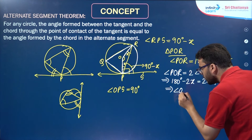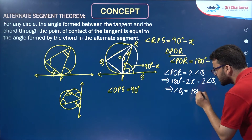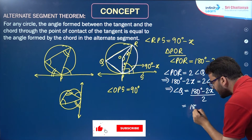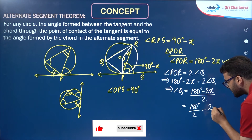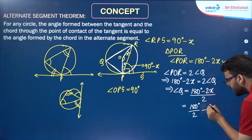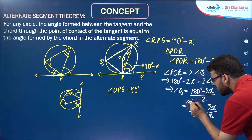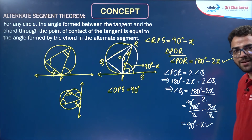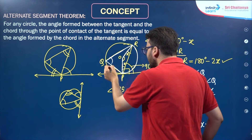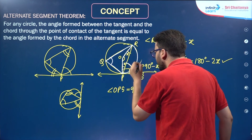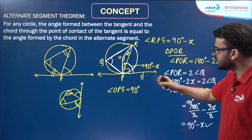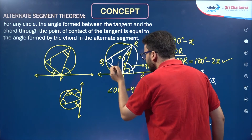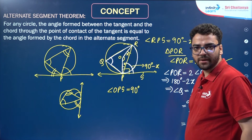From here, angle Q equals (180 minus 2X) divided by 2, which simplifies to 90 minus X. So angle Q is 90 minus X, and angle RPS is also equal to 90 minus X. We have proved that this angle is equal to this angle — that is the alternate segment theorem.